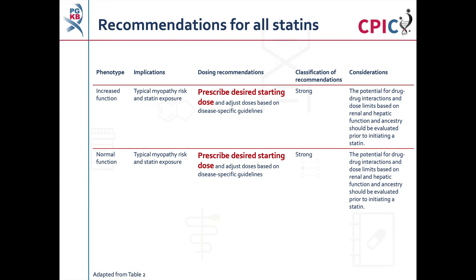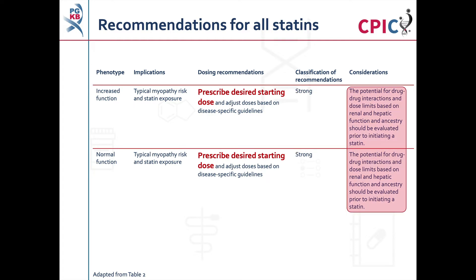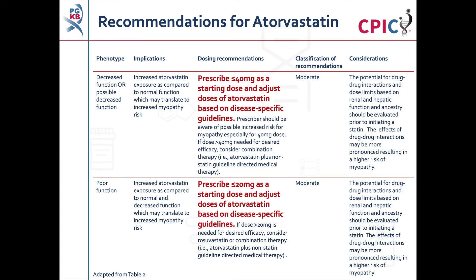The next few slides will go over the CPIC recommendations for atorvastatin, lovastatin, pitavastatin, pravastatin, and simvastatin, as shown in Table 2 of the guideline publication. The CPIC recommendations for SLC01B1 decreased function, possible decreased function, and poor function patients differ by drug. However, the recommendations for increased function and normal function patients are the same for all statins. Patients with increased or normal function may have typical statin exposure and a typical risk of myopathy; these patients can be prescribed the desired starting dose of statin. This is a strong recommendation.